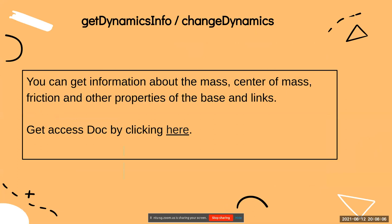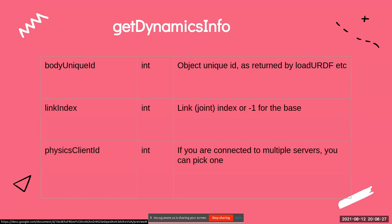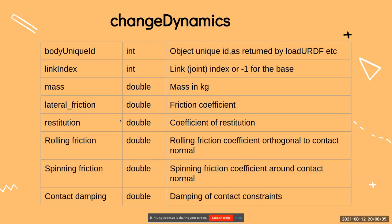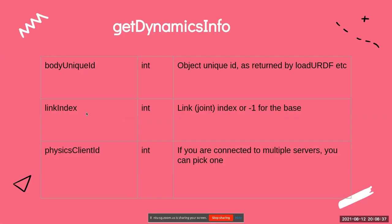You can get information about mass, center of mass, friction, and other properties of the base and links. I've added the doc link — you can refer to the PyBullet document for their parameters and outputs. `getDynamicInfo` requires your body unique ID, which you give to your robot, and a link index which defaults to minus one for the base.